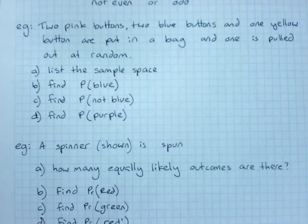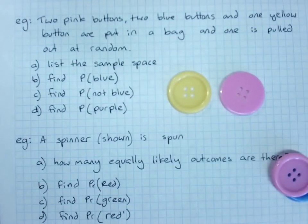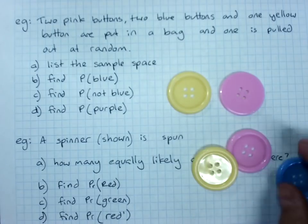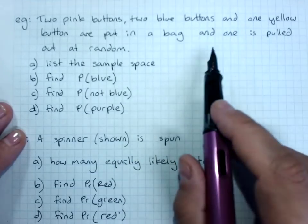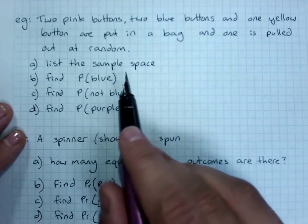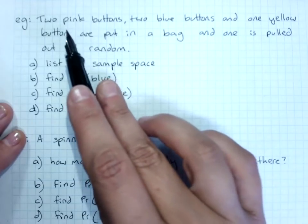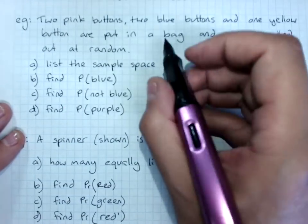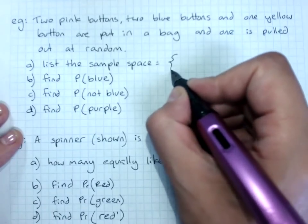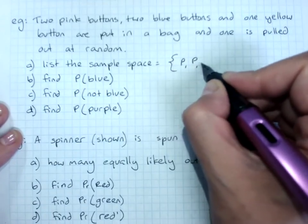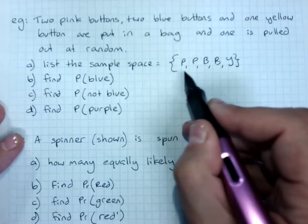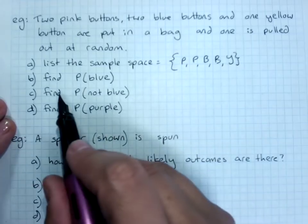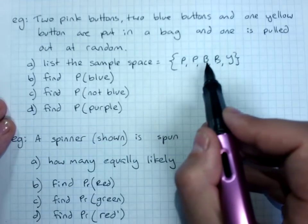Another example. Two pink buttons, two blue buttons, and one yellow button are put into a bag and one is pulled out at random. List the sample space: two pink, two blue, one yellow. So the sample space is pink, pink, blue, blue, yellow, because there's two different ways of getting a pink one - there's two pink buttons in there.